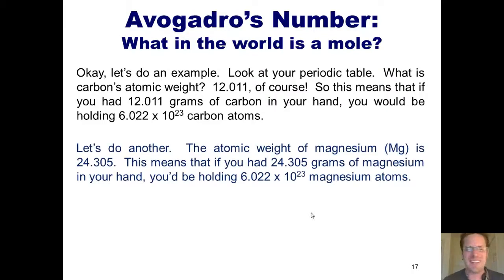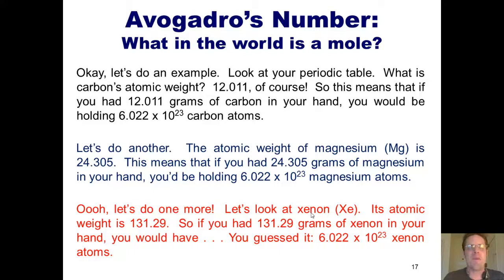Let's do another. The atomic weight of magnesium is 24.305. This means that if you had 24.305 grams of magnesium in your hand, you would be holding 6.022 times 10 to the 23rd magnesium atoms. Let's do one more. Let's look at xenon. Its atomic weight is 131.29. So if you had 131.29 grams of xenon in your hand, you would have, you guessed it, 6.022 times 10 to the 23rd xenon atoms in your hand. I hope that makes sense.